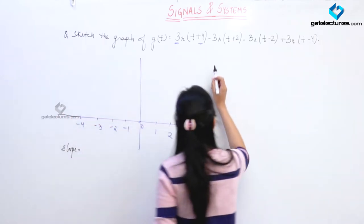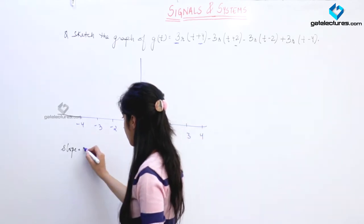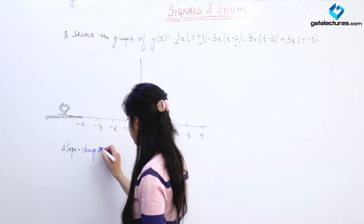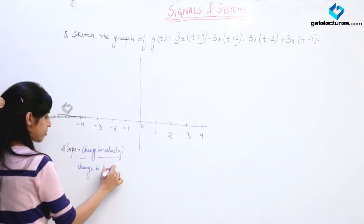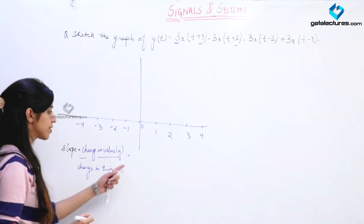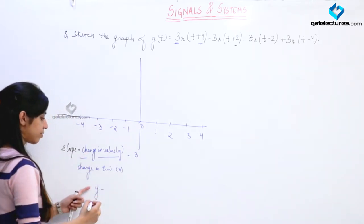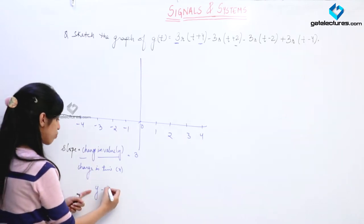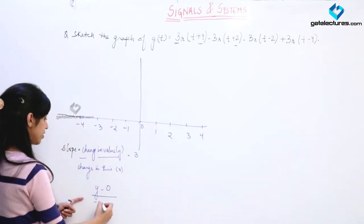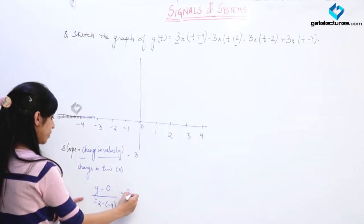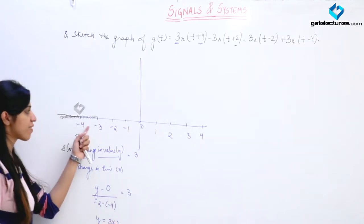The next slope change is going to happen at T equal to minus 2. Slope is change in value upon change in time, which represents change in y upon change in x. This change in value upon change in x should be 3. Initially the value was 0, and the time changes from minus 4 to minus 2, which is a change of 2, so the final y value should be 6.